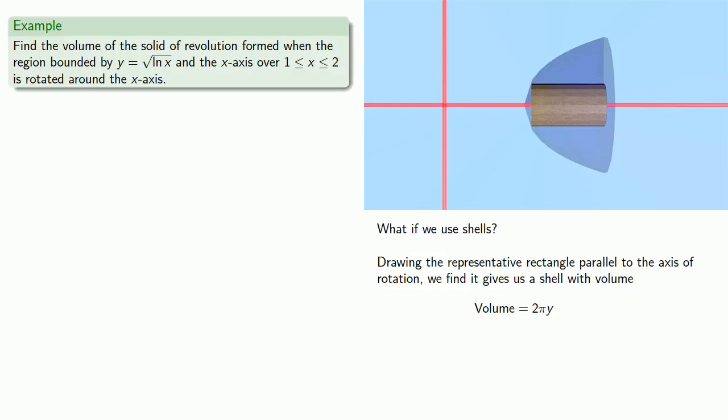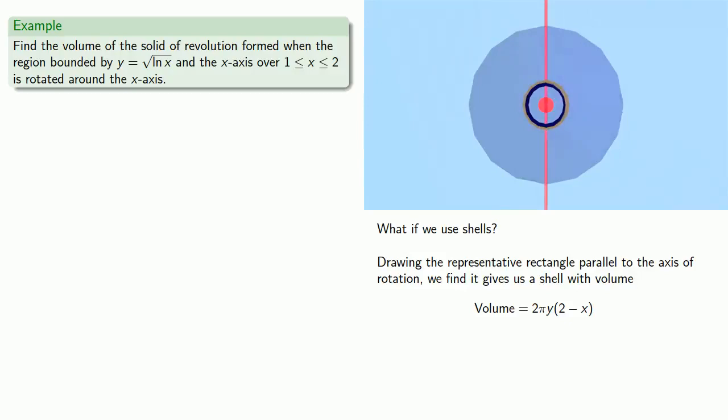The height of the shell goes from this x value up to x = 2. So the height is 2 minus x. The thickness is a tiny portion of the y-axis. So our representative volume will be 2π y(2 - x) dy. Since we're going from x equals 1 to x equals 2, we'll sum these volumes over the corresponding y limits.